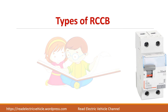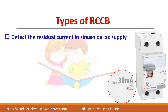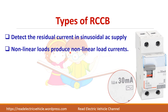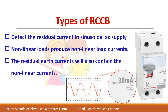Next, we will see the different types of RCCB. In one model, a sine waveform is shown in a box, which represents that this particular RCCB can only detect the residual current if it is sinusoidal in shape. But today, most of our loads are non-linear because we are using power electronics everywhere, which draws only non-linear current. In such cases, the residual current will also be non-linear and this type of RCCB will not be able to detect non-linear currents.